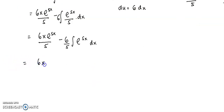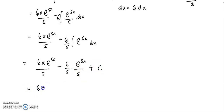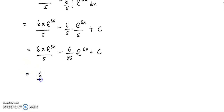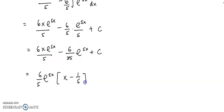Integrate e to the 5x using the formula. You get e to the 5x over 5. So you have 6xe to the 5x over 5, minus 6 over 5 times e to the 5x over 5, plus constant c. Simplify: you have 6 over 25 e to the 5x. You can factor out the common factors — 6, e to the 5x, and 1 over 5 — giving e to the 5x times (x minus 1 over 5) times 6 over 5 plus c.